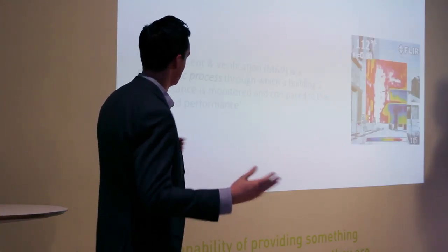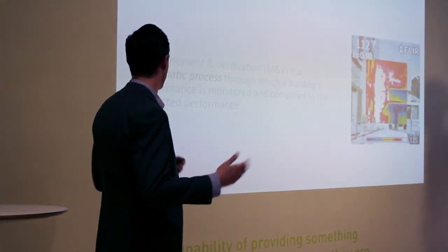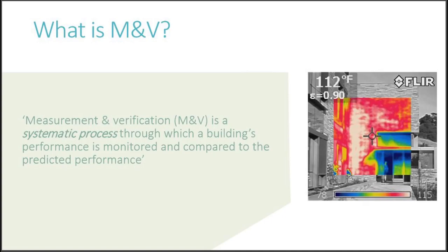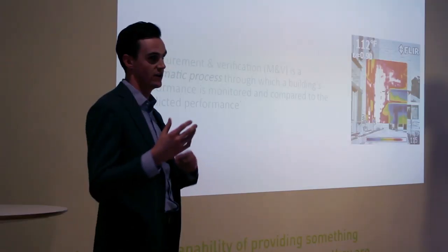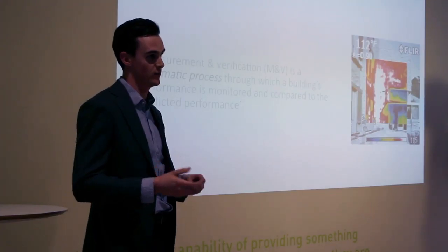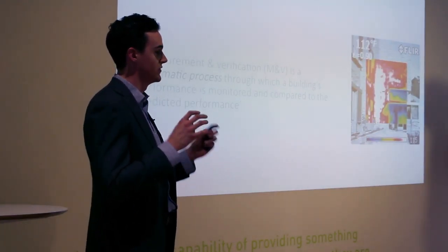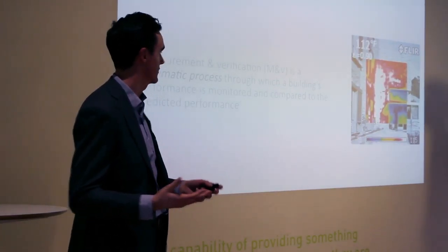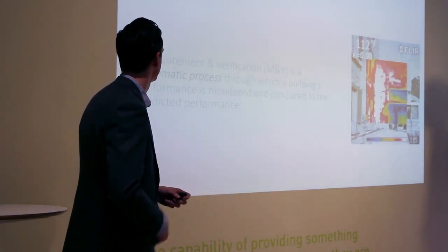Enter M&V — measurement and verification. It's a systematic process through which a building's performance is monitored and compared to the predicted performance. In doing this comparison, we can see and tune the building to perform how it was actually designed.